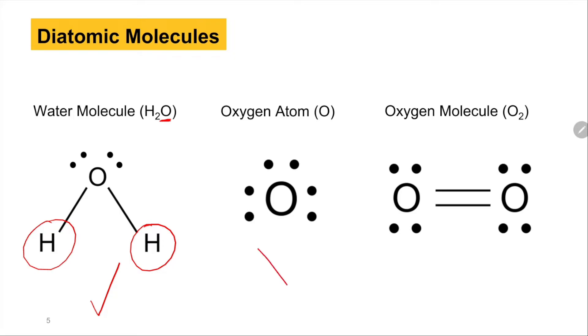However, a single oxygen atom cannot be by itself in standard state. It will pair up with another oxygen atom to form a diatomic molecule. So this oxygen atom will become an oxygen molecule.